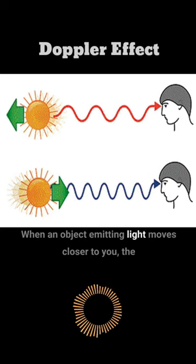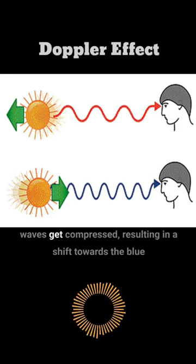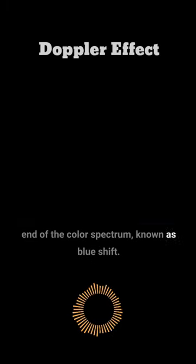When an object emitting light moves closer to you, the waves get compressed, resulting in a shift towards the blue end of the color spectrum known as blue shift.